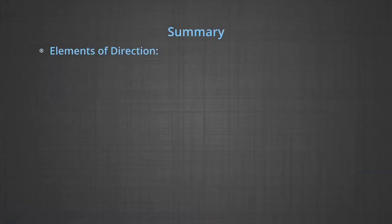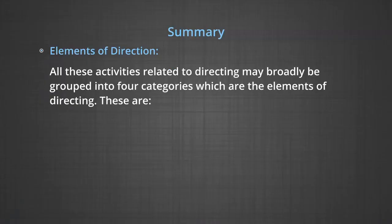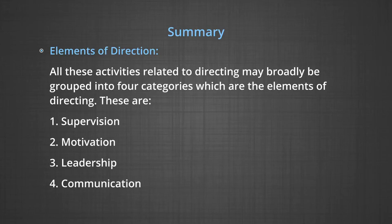Let us summarize what all we discussed in this module. Elements of direction: the process of directing involves guiding, coaching, instructing, motivating, and leading the people in an organization to achieve organizational objectives. The nature of directing is that it is not a single activity, but a group of functions. All these activities related to directing may broadly be grouped into four categories, which are the elements of directing: supervision, motivation, leadership, and communication.